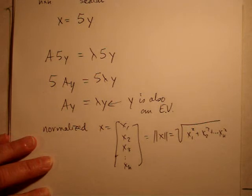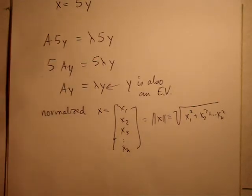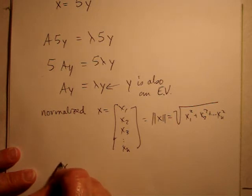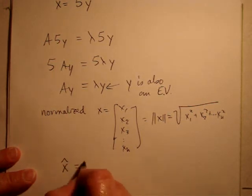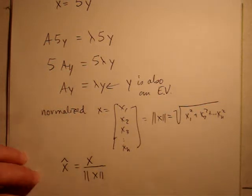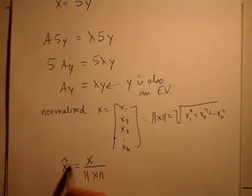And so to get an eigenvector that everybody would hopefully get the same answer for during the process, we could say that the eigenvector that we want, x hat, is take the eigenvector you get, whatever it is, and divide by the norm. So then when you take the norm of this new x hat vector, its norm is going to be 1,